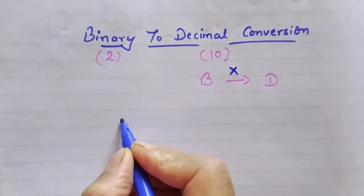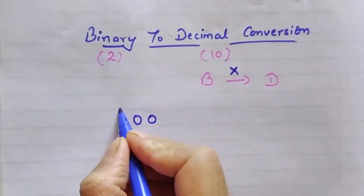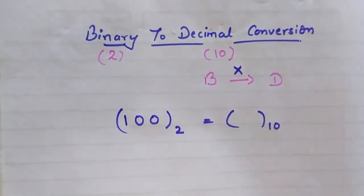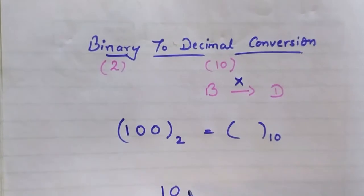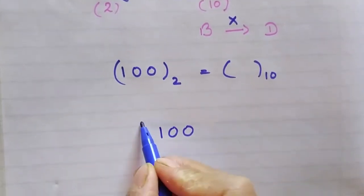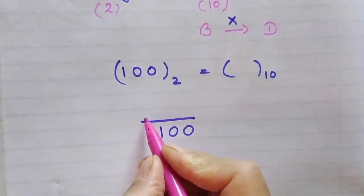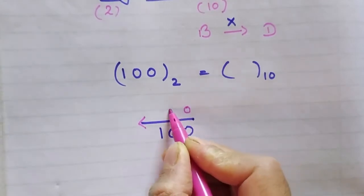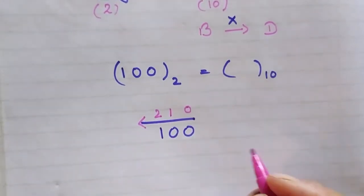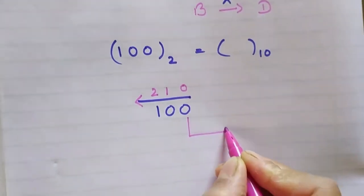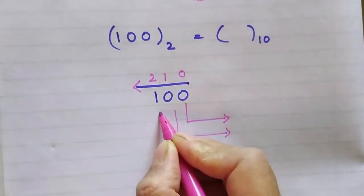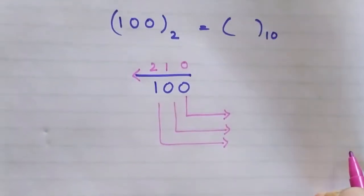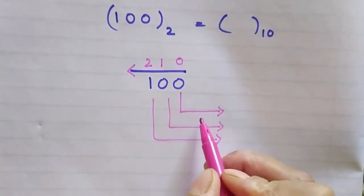Let's take the question as 1, 0, 0. I have to convert this binary number into decimal. How will I proceed? First of all, write the number given in the question, then draw an arrow like this and write the numbers starting from 0, 1, 2. Then again we will make arrows like this. Now I will perform the multiplication operation on the subsequent bits.